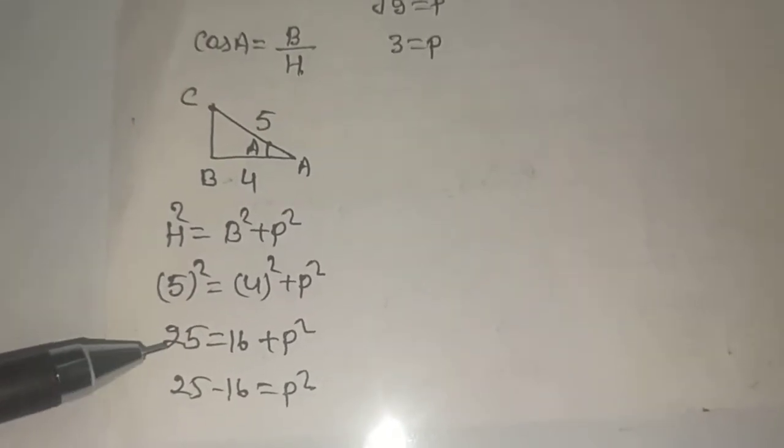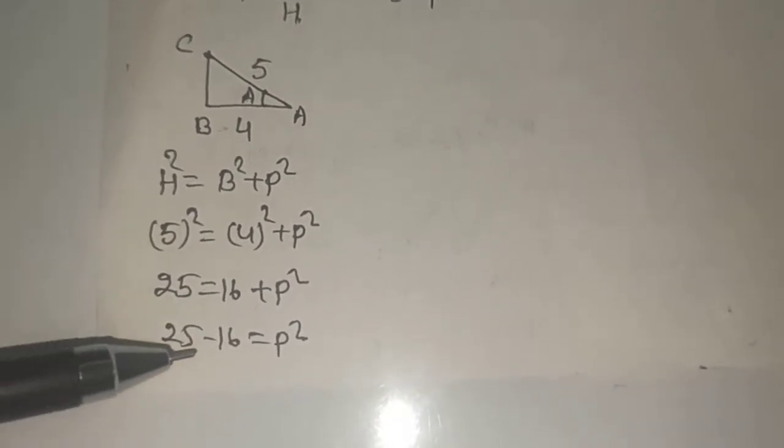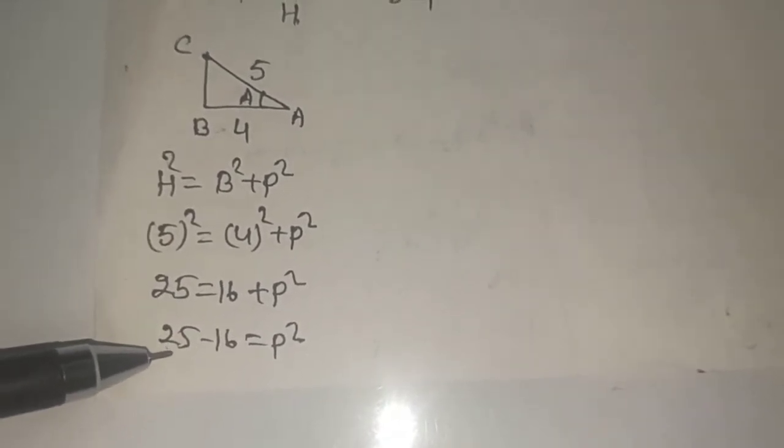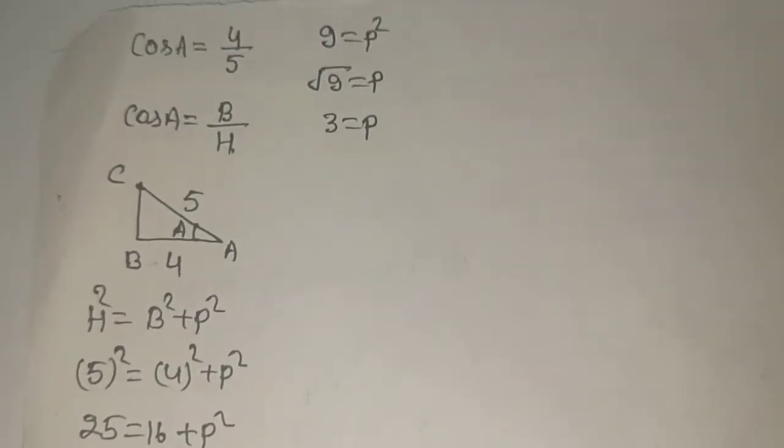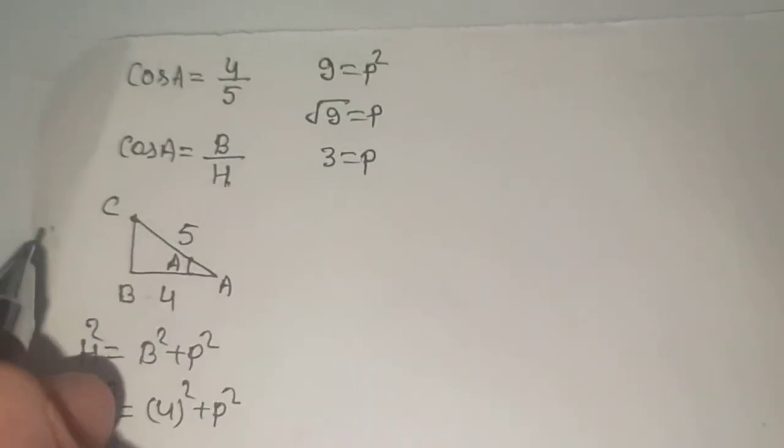Square of 5 is 25, square of 4 is 16. Now, change the position of 16 from RHS to LHS. 25 minus 16 would be 9, and 9 equals to P square, so P will be 3. So value of P is 3.